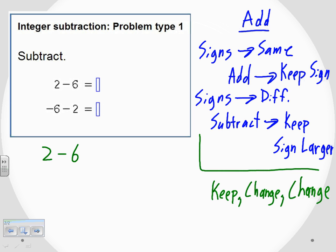The first keep means that we keep the first number just as it is. It was a two. It's still going to be a two. It was positive. It's still positive. That's the keep part. Then the next thing says change. We actually changed the operation. So this is going to go from being a subtraction problem. It's going to turn into an addition problem. So we have changed subtraction into addition.